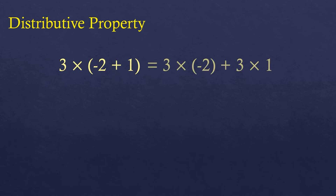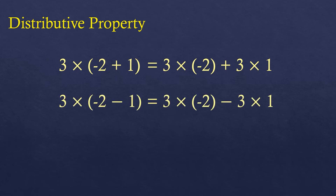Now we are going to illustrate the distributive property for the set of integers. It is applicable for addition. Three times the quantity negative two plus one equals three times negative two, plus three times one. We are distributing whatever is multiplied to the group — the group of negative two and one is multiplied by three, so we distribute the three to both negative two and one. This works for both addition and subtraction, and the result will be correct if you distribute the three from outside. But it's not applicable for multiplication and division.